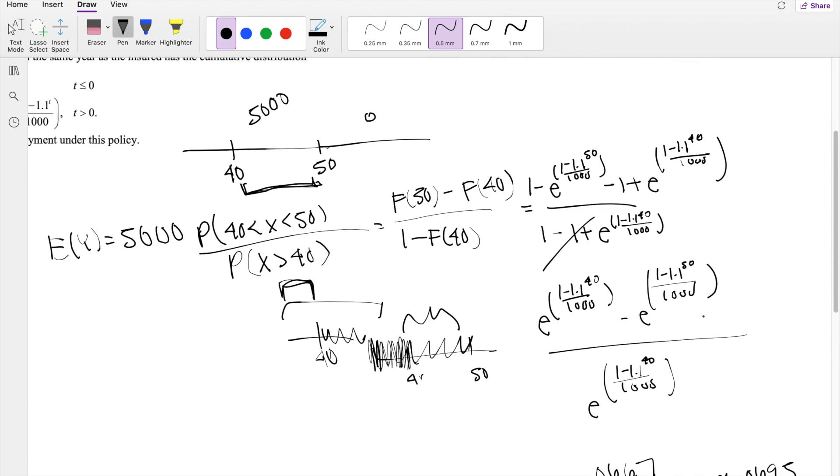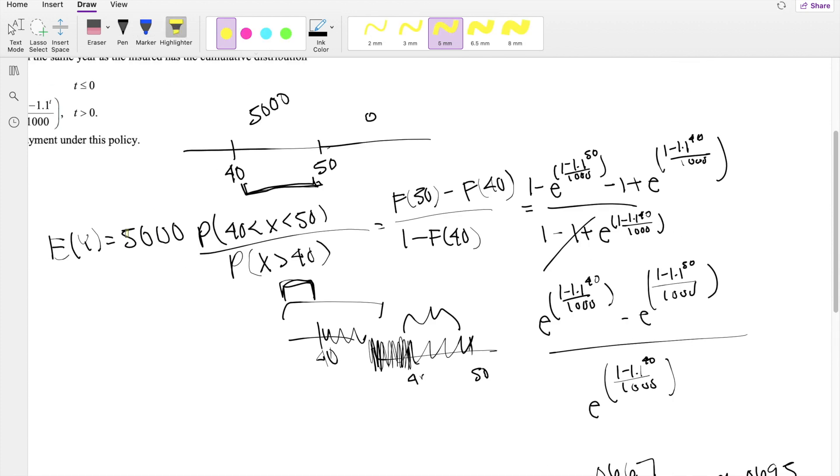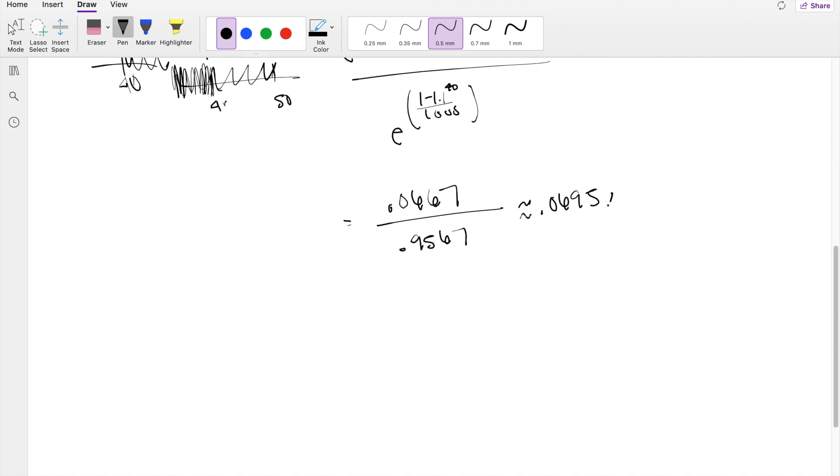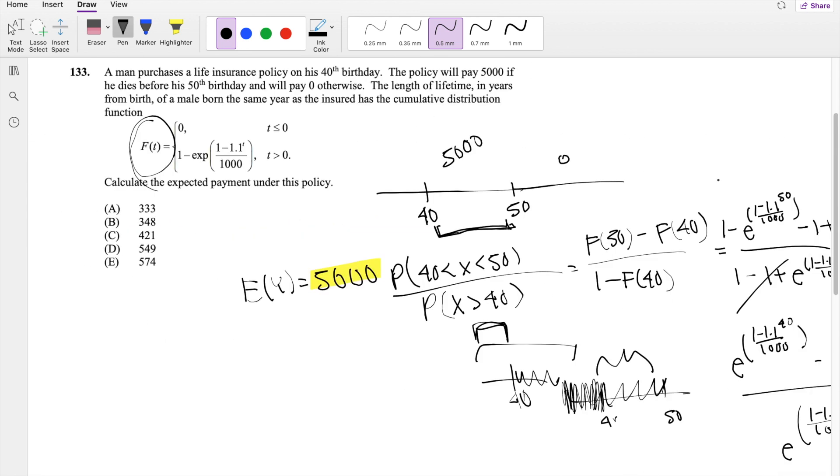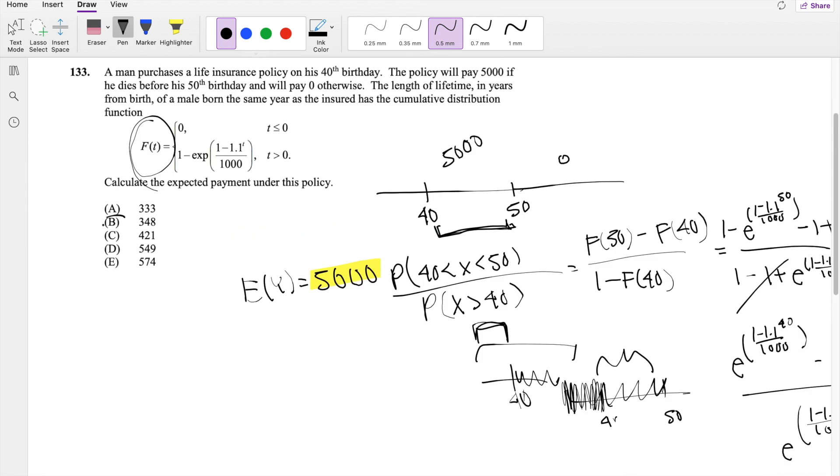But again, we have to make sure we multiply it by 5,000 here. 5,000 times this probability. So times 5,000. And this is equal to 347.95, which is approximately equal to 348, our answer B.